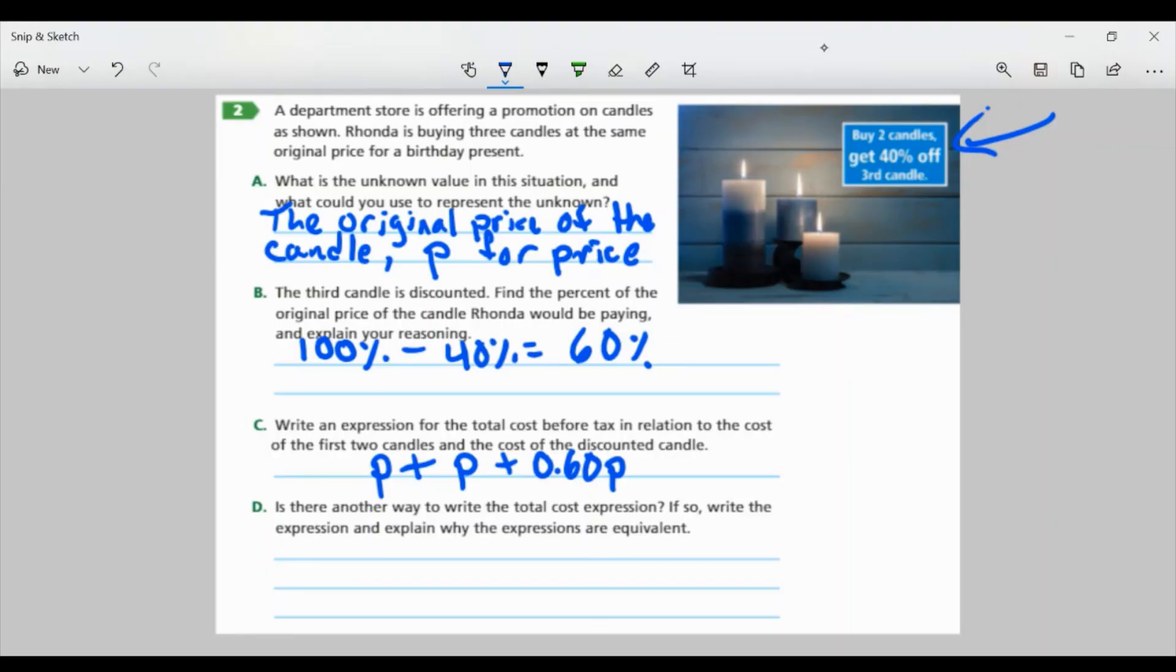Part D, is there another way to write the total cost expression? If so, write the expression and explain why the expressions are equivalent. So, yes, there is. And I'm going to rewrite this here, P plus P plus 0.60P. When I combine my like terms, they all have the variable P. So all of them are like terms. I can add them all together. Remember, if there's no number in front of the variable, then it's 1. So it's 1P plus 1P plus 0.60P. Well, 1 plus 1 is 2 plus 0.60P would give me 2.60P. So that is my equivalent expression because I combine my like terms and can simplify it down.